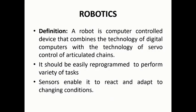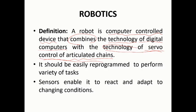Now for the definition of robotics: a robot is a computer-controlled device that combines the technology of digital computers with the technology of servo control of articulated chains. It is a combination of digital computer technology together with servo control of articulated chains. The hardware should be easily reprogrammable.